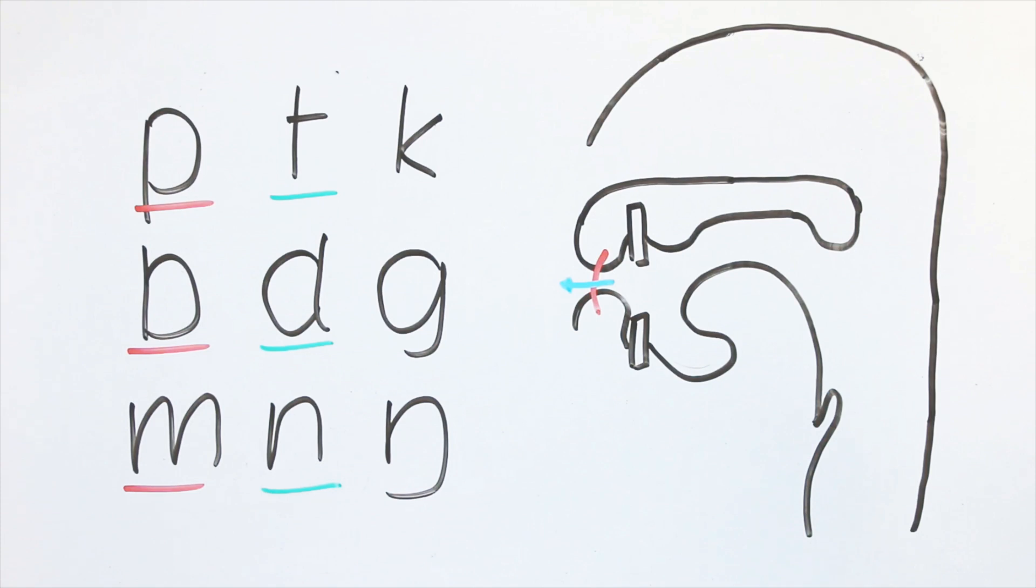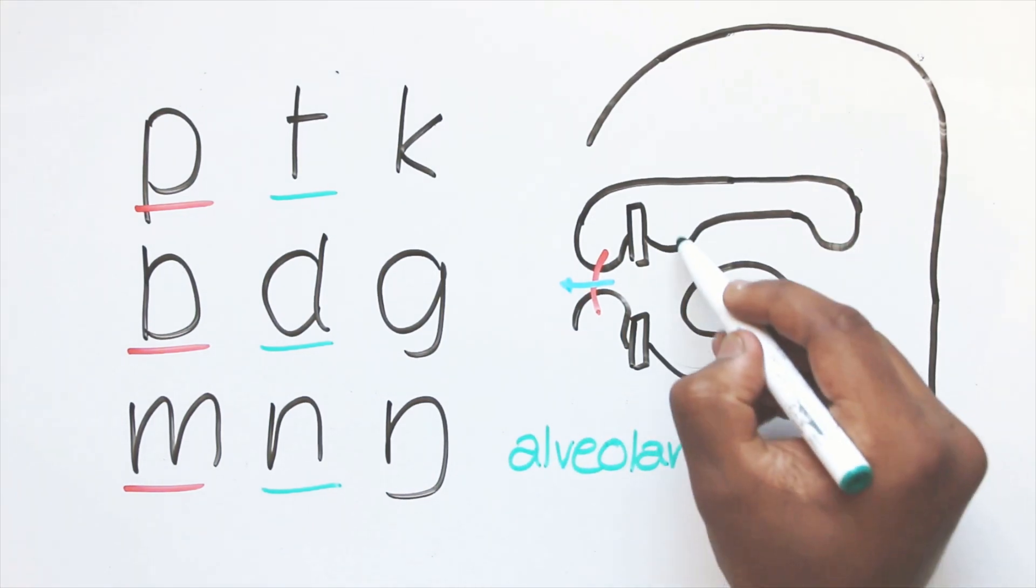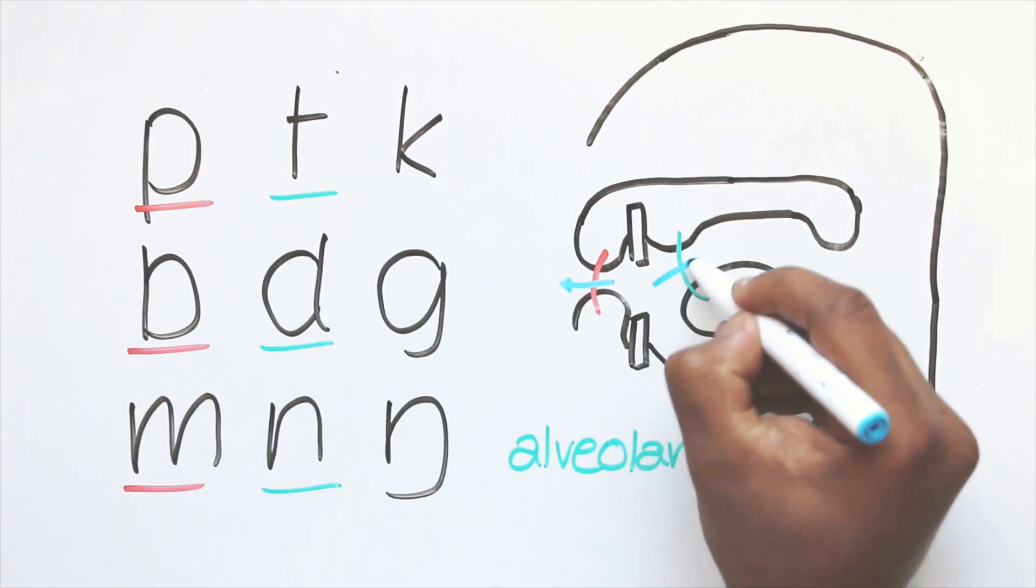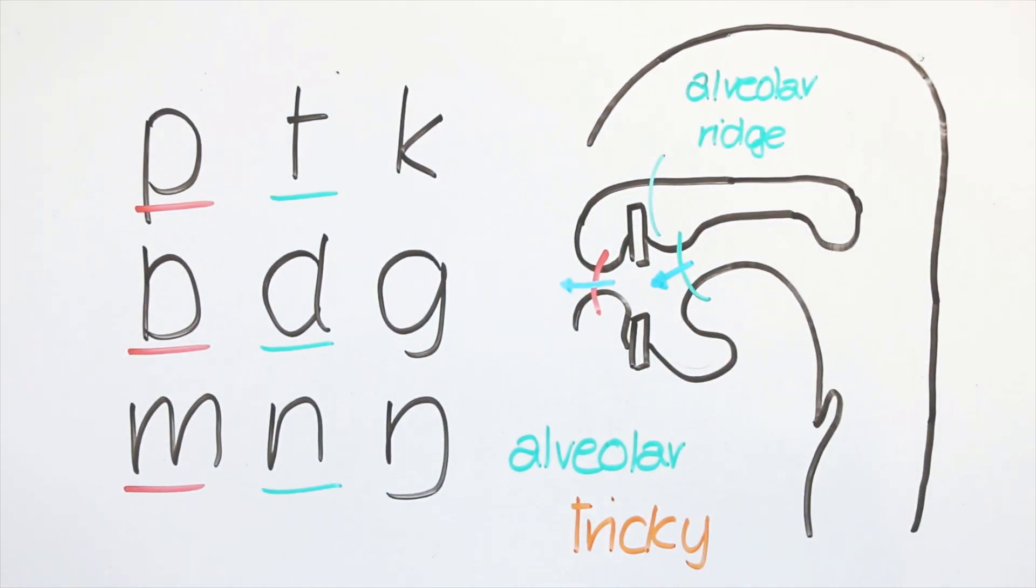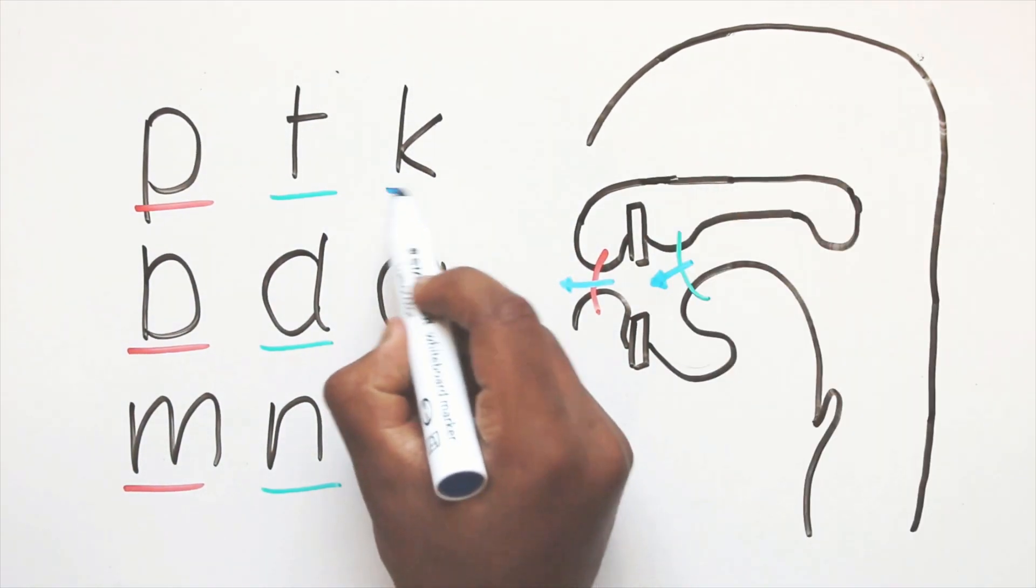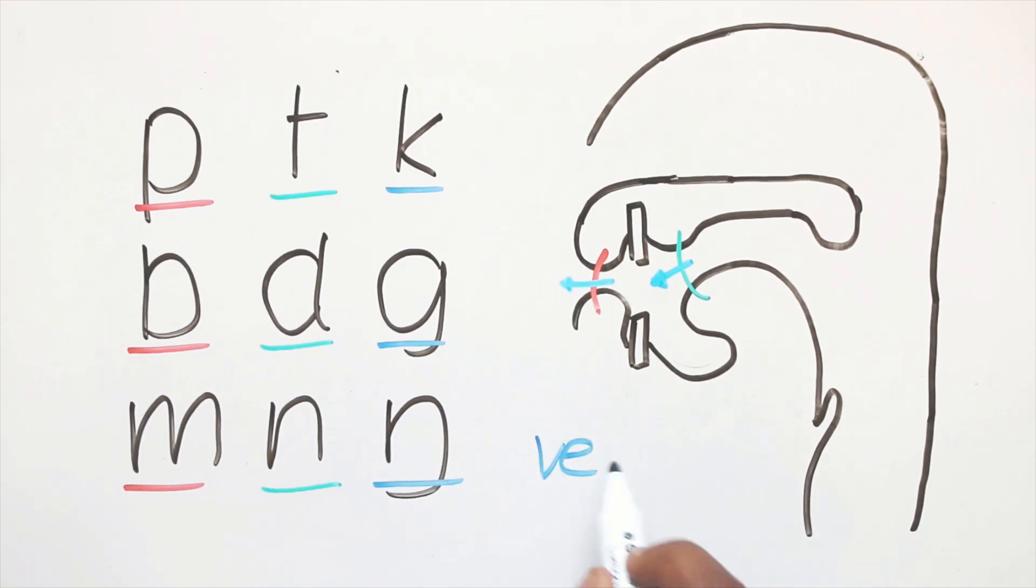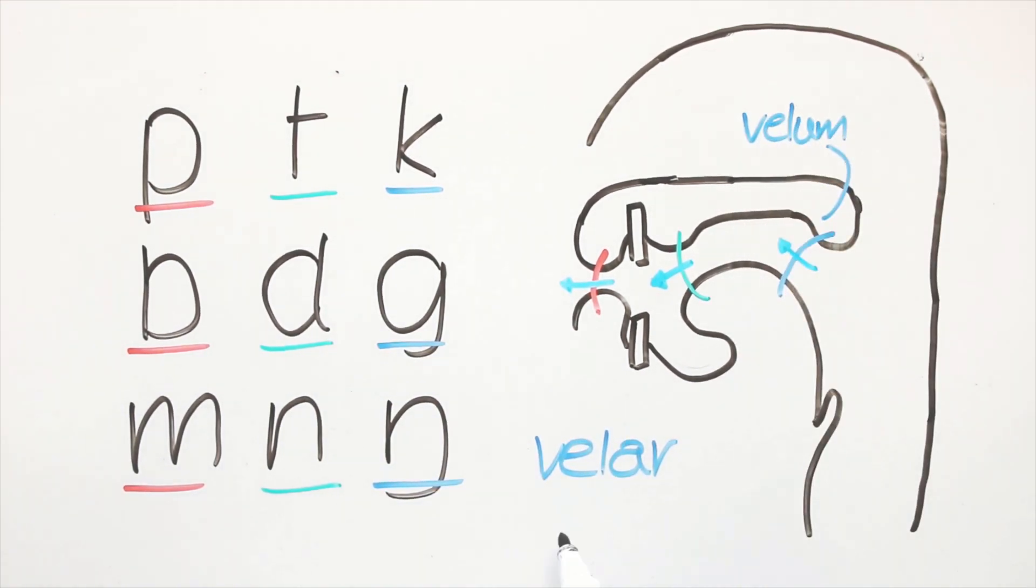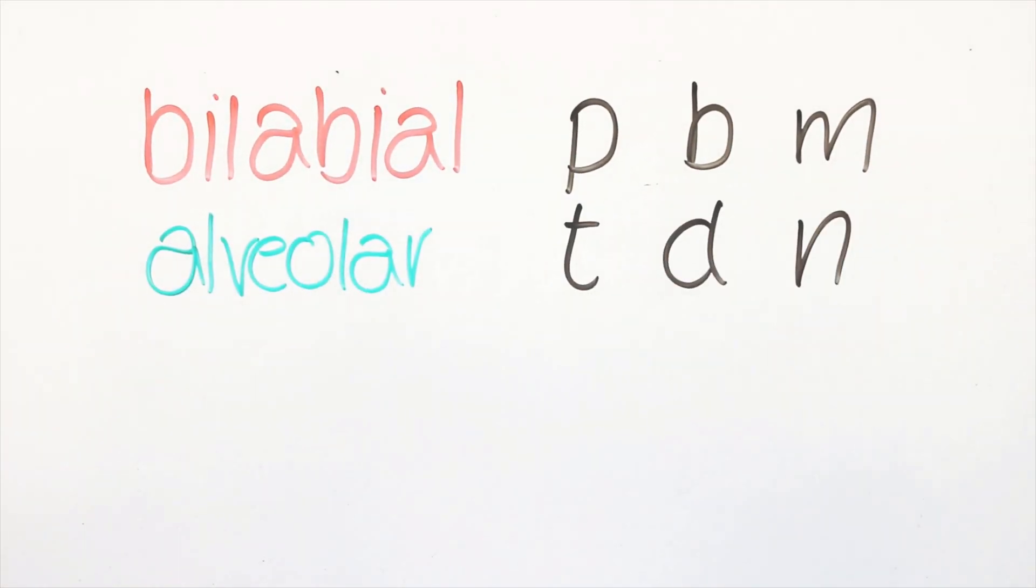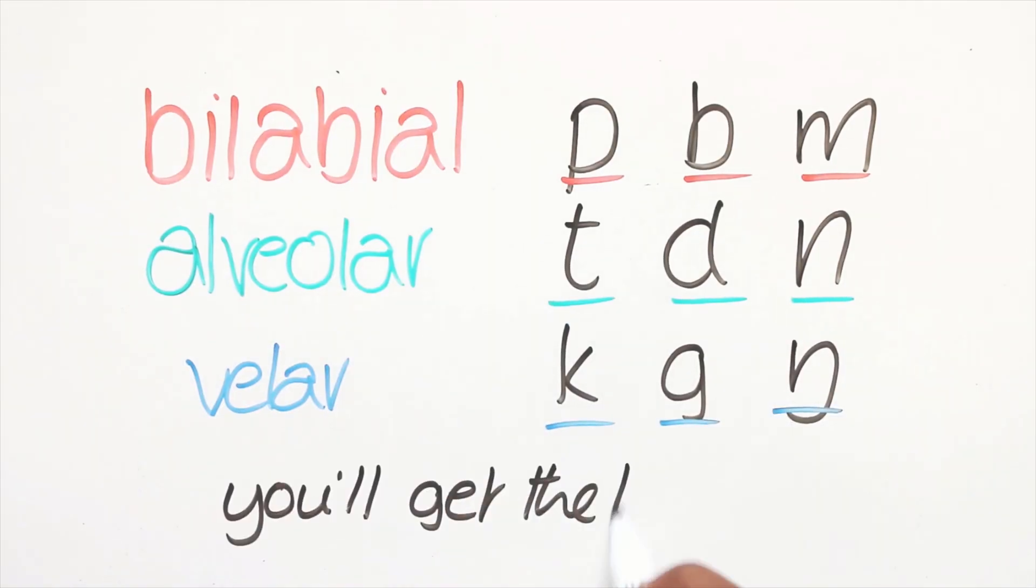The t, d and n are alveolar because their point of articulation is where the tongue touches the alveolar ridge. This one's a bit tricky, so I remember it as a tricky one and associate it with the letter t. The k, g and n are velar, as they are produced when the tongue touches the velum. Don't confuse this with alveolar, they are quite different. So you have bilabial, alveolar and velar. These can be difficult to remember at the start, so I will colour code it to make it easier, but you'll get the hang of it over time.